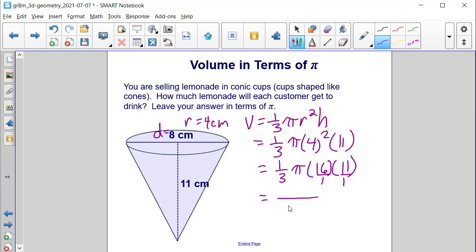When we do that, we will definitely have a 3 in the denominator. And 16 times 11 is 176 pi. Again, we leave pi in our answer. And our solution is in cubic centimeters.